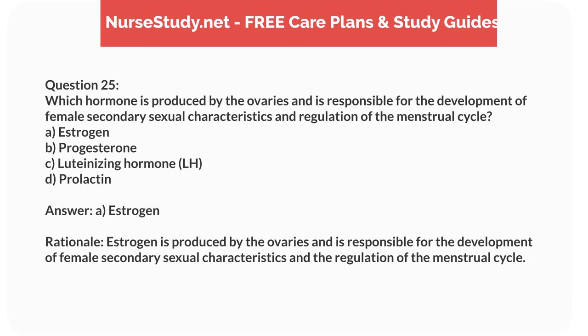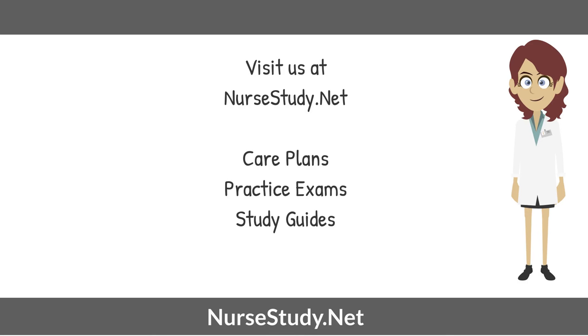Answer: A. Estrogen. Rationale: Estrogen is produced by the ovaries and is responsible for the development of female secondary sexual characteristics and the regulation of the menstrual cycle. Visit nursestudy.net for more nursing practice exams, care plans, and study guides.